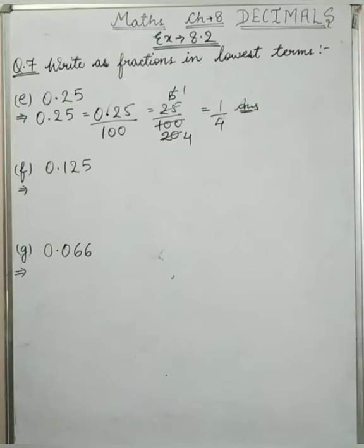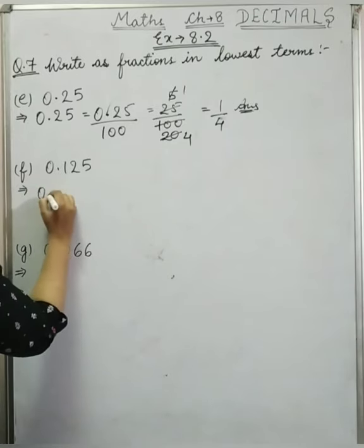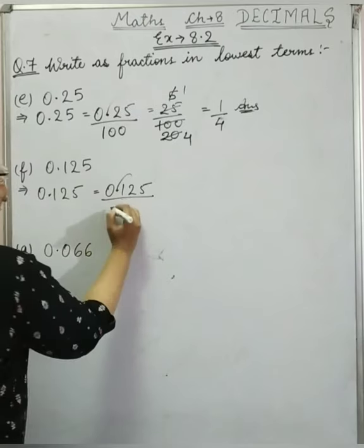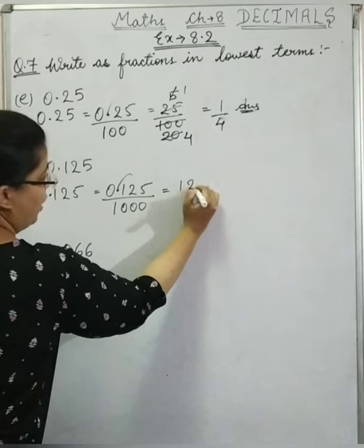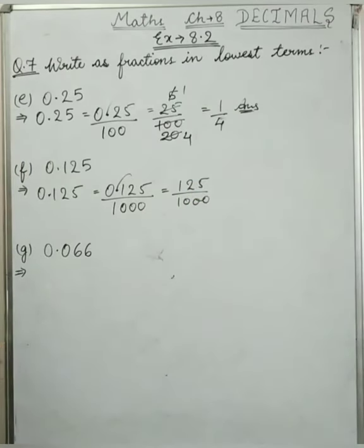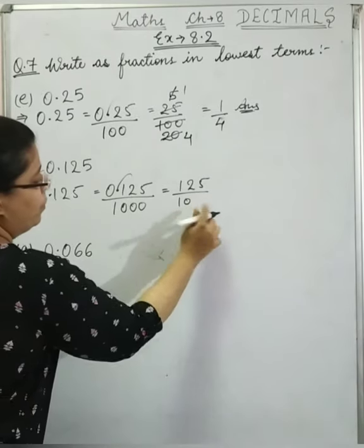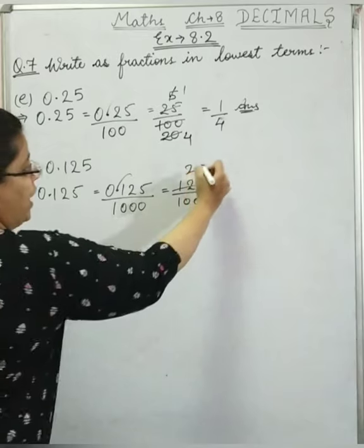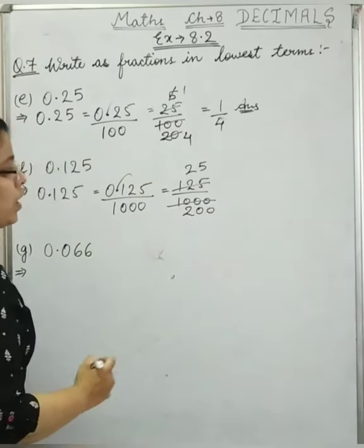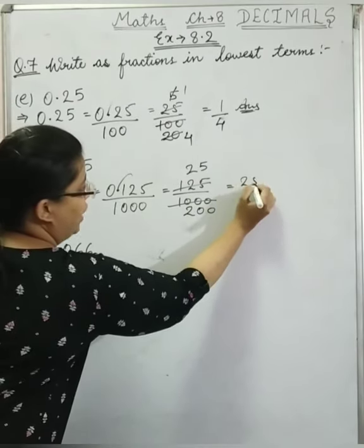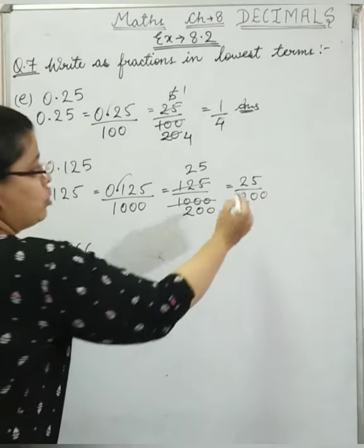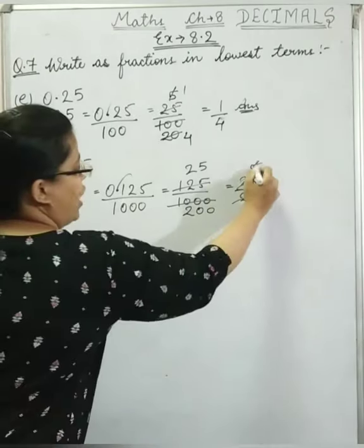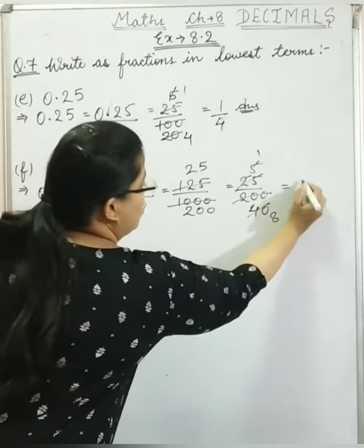Now next is f: 0.125. After the decimal there are 3 digits, so 3 zeros in the denominator: 125 upon 1000. We reduce by dividing by 5: 5 times 25 is 125, and 5 times 200 is 1000, giving 25 upon 200. Again dividing by 5: 5 times 5 is 25, and 5 times 40 is 200, giving 5 upon 40. Again dividing by 5: 5 times 1 is 5, and 5 times 8 is 40. So the answer is 1 upon 8.